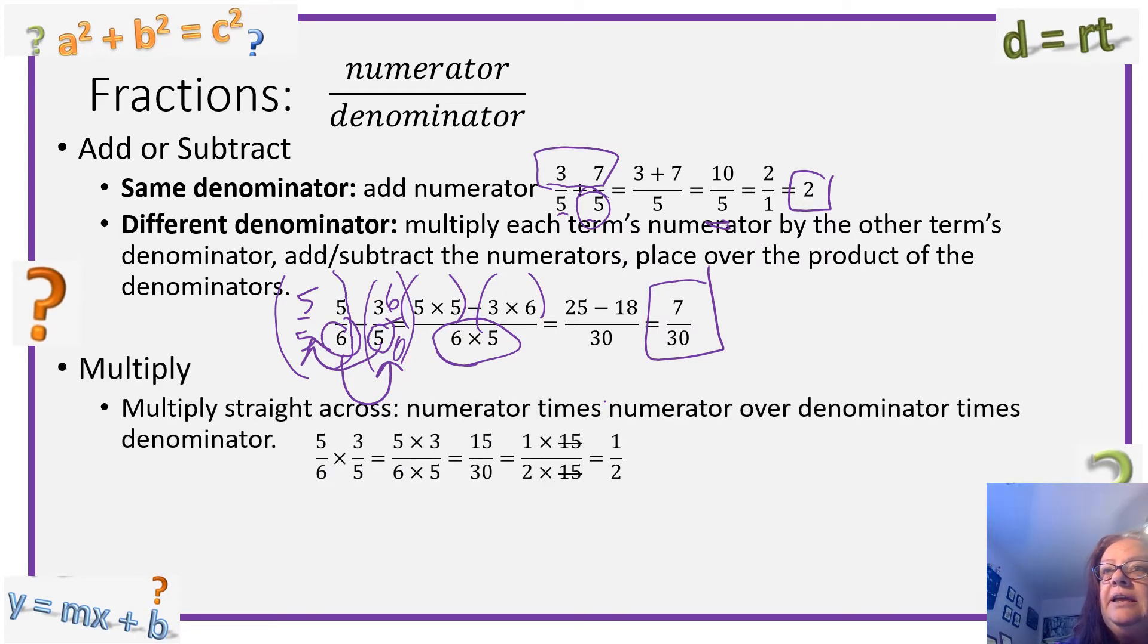When you multiply, remember you multiply straight across. It's going to be 5 times 3 and 6 times 5. 5 times 3 is 15, 6 times 5 is 30. But they do have something in common. 30 is 15 times 2. We factor it. We can cross off the common 15s and we're left with an answer of 1 half.